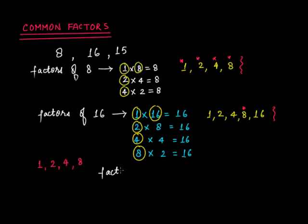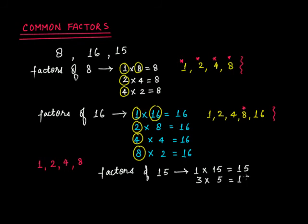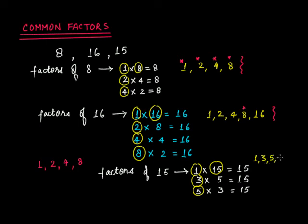The factors of 15: 1 times 15 is 15, 3 times 5 is 15, and 5 times 3 is 15. So the factors of 15 are 1, 3, 5, and 15.